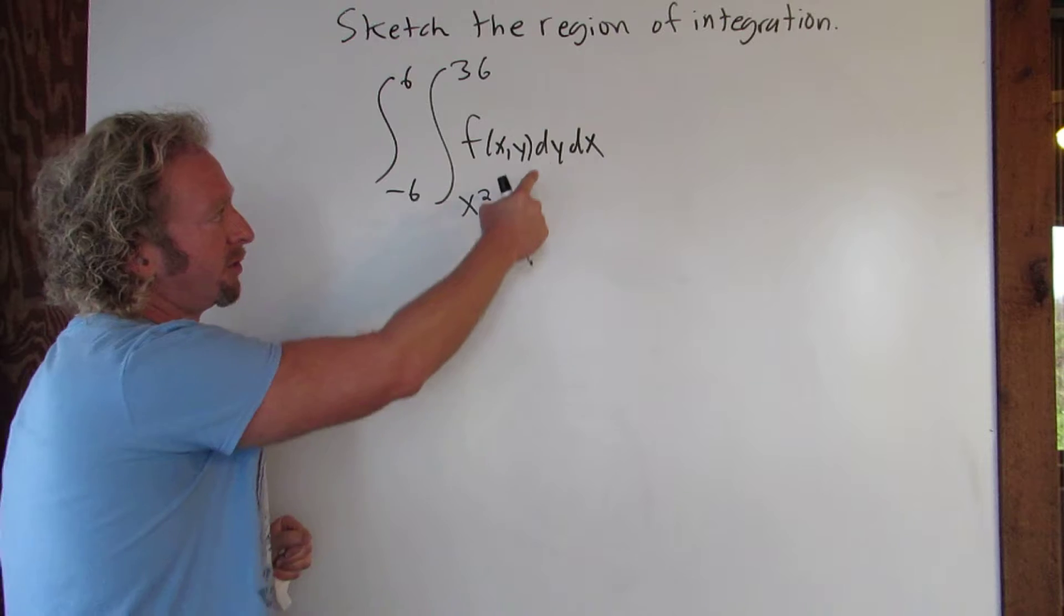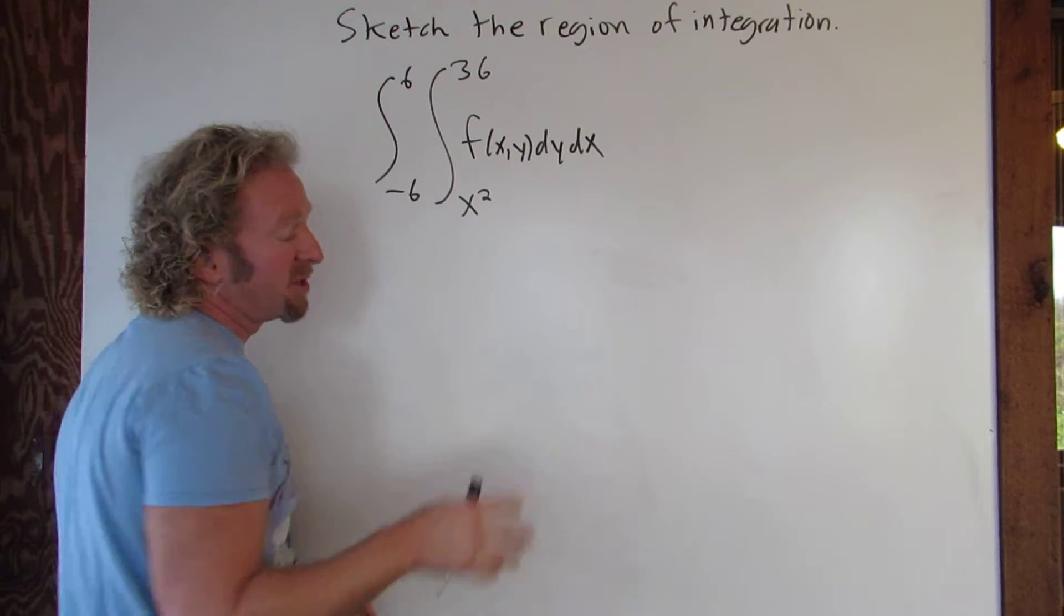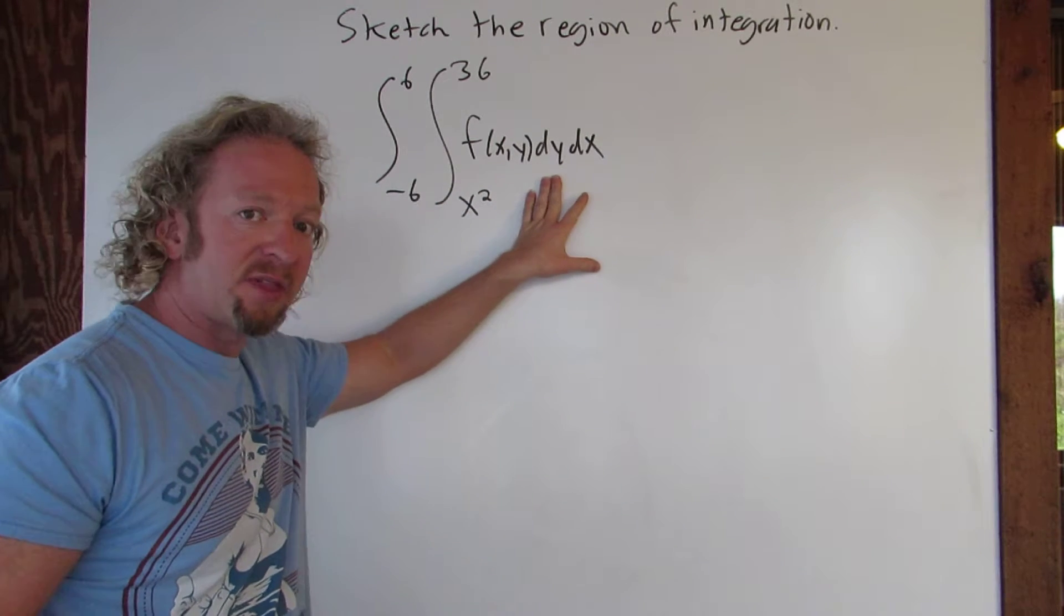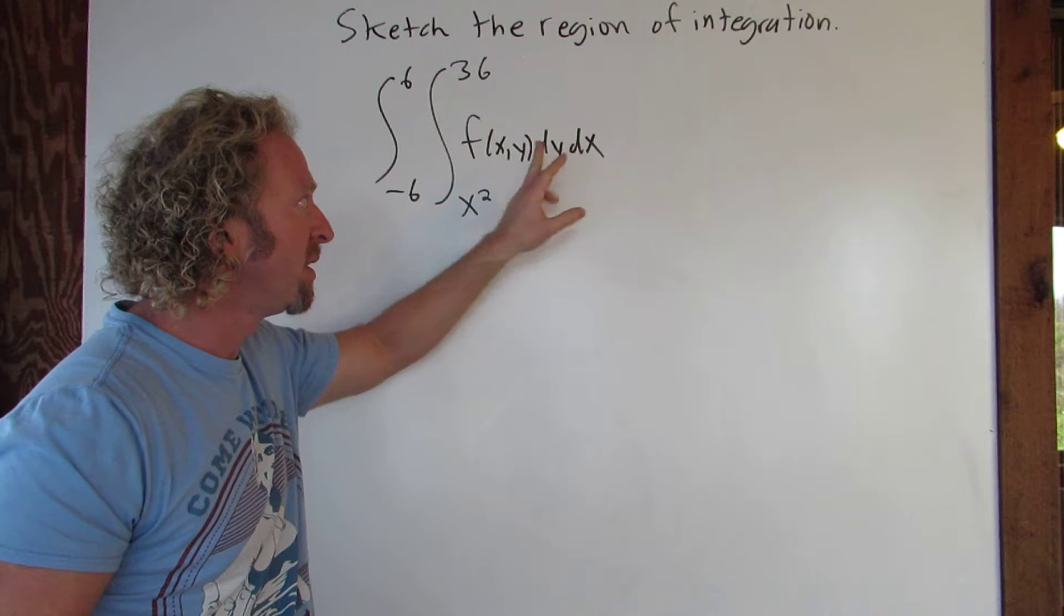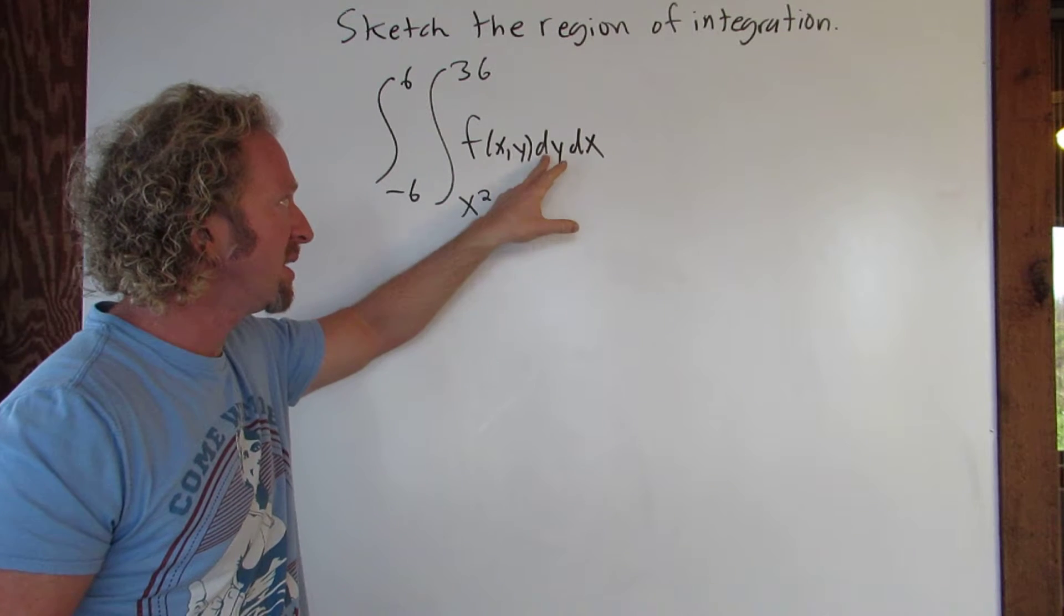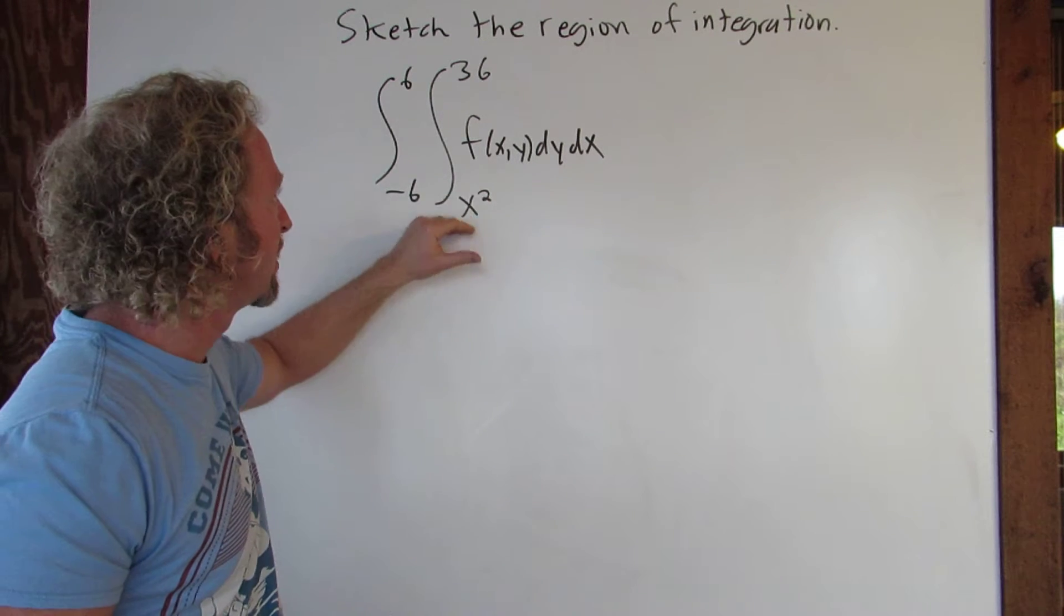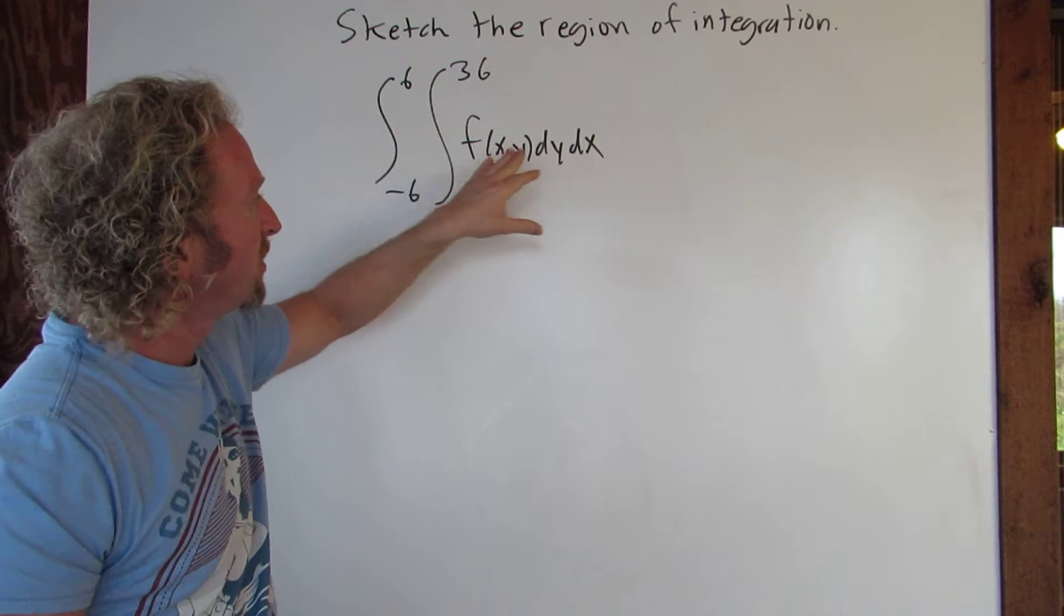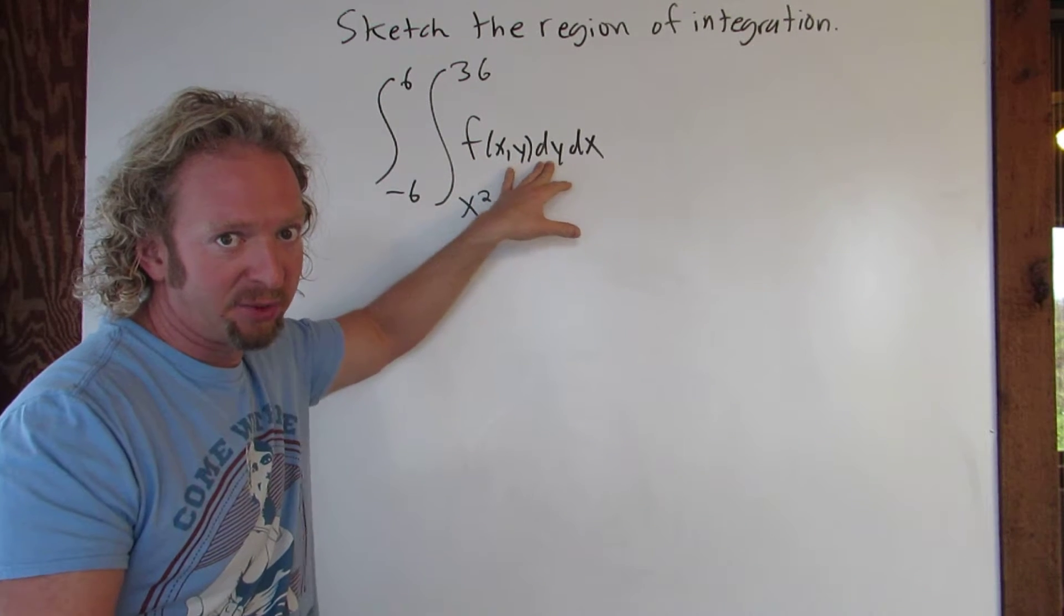Okay so here's how it works. So here we have dy dx. That means first we integrate with respect to y and then we integrate with respect to x. So the way to think about it is y is a function of x, right? So these limits will always have x's in them. And so whenever y is a function of x we have a vertical rectangle.